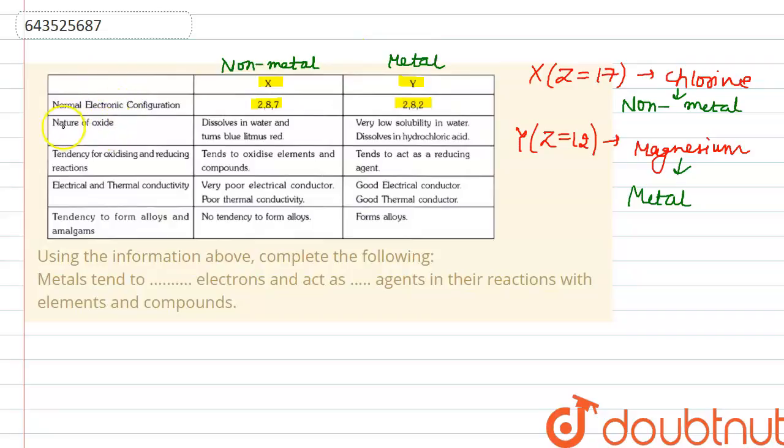Now let's see the nature of oxide. Non-metal dissolves in water and turns blue litmus red. For metal, very low solubility in water, dissolves in hydrochloric acid. Oxidizing and reducing reaction: non-metal tends to oxidize elements, it acts as oxidizing agent, whereas